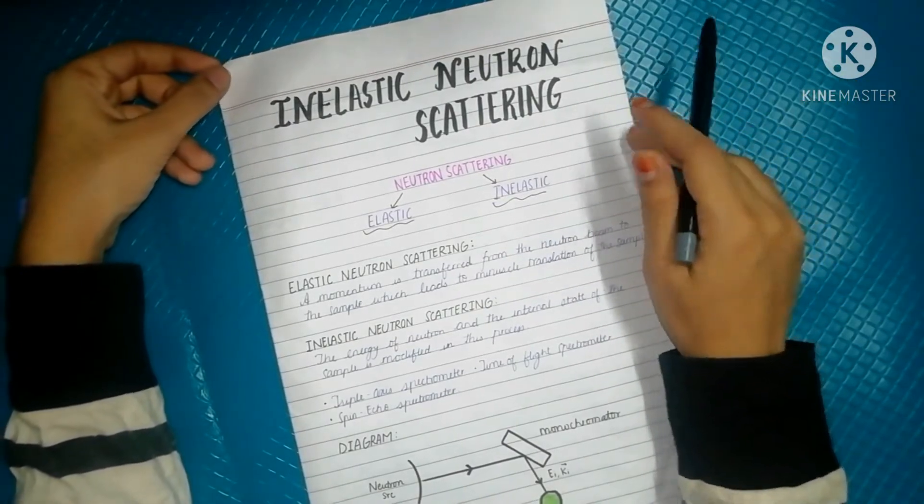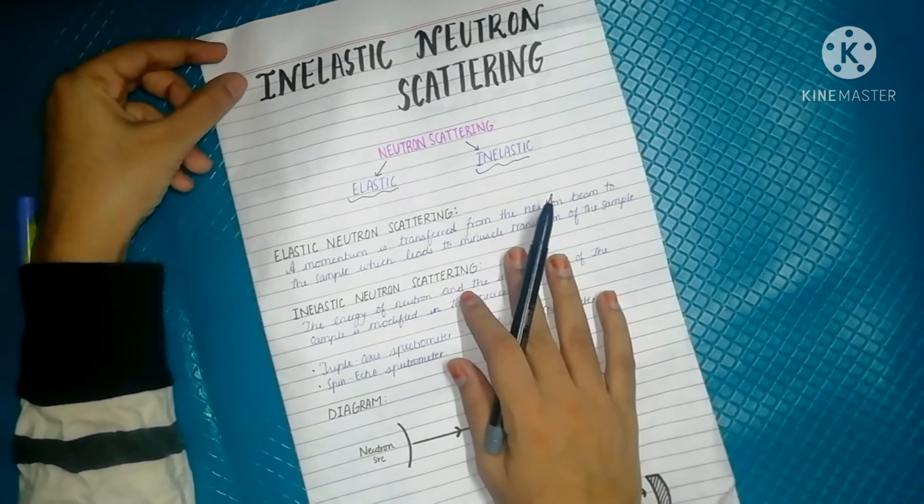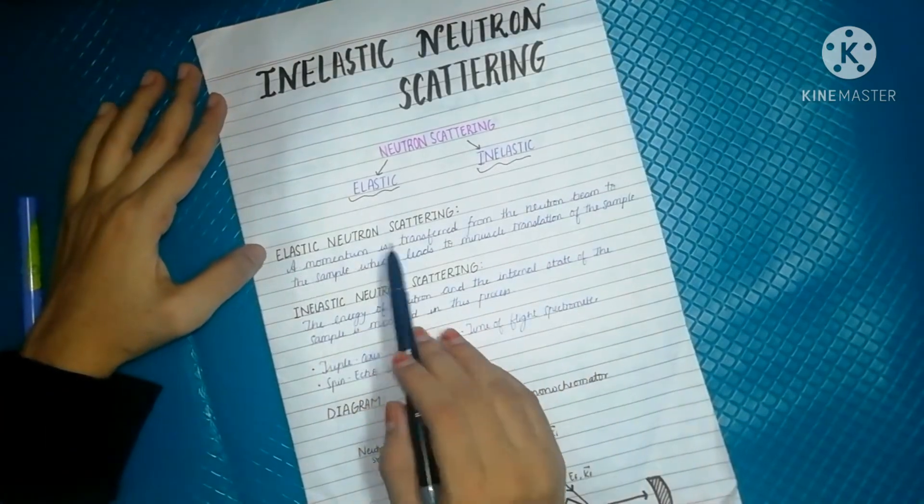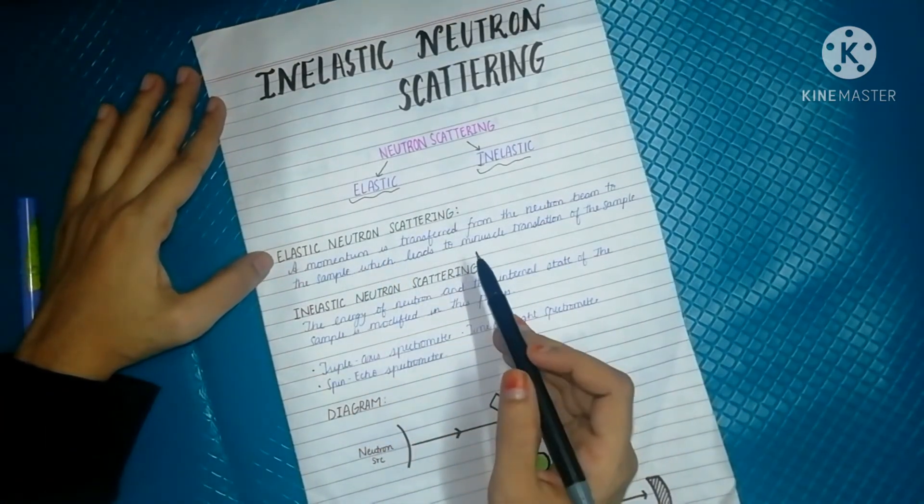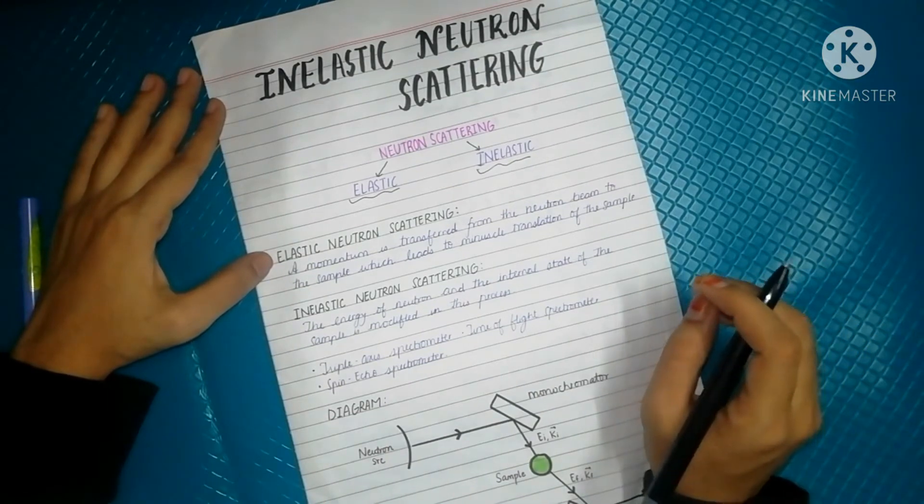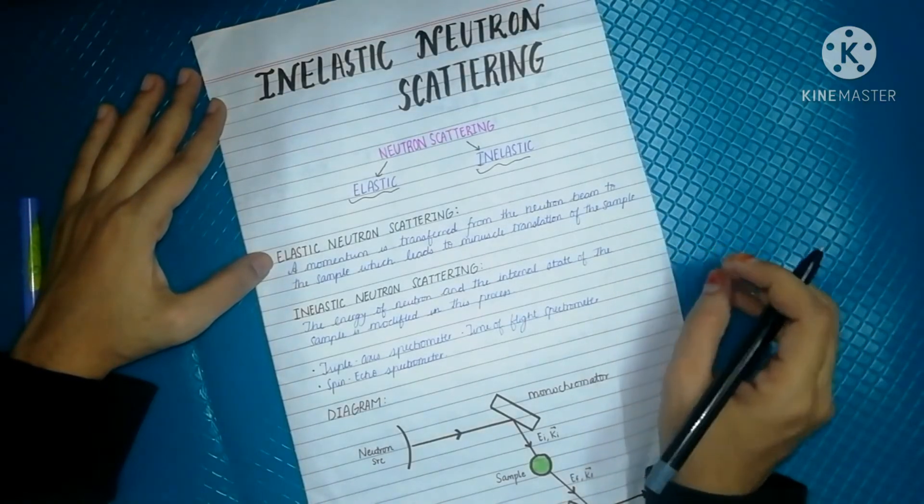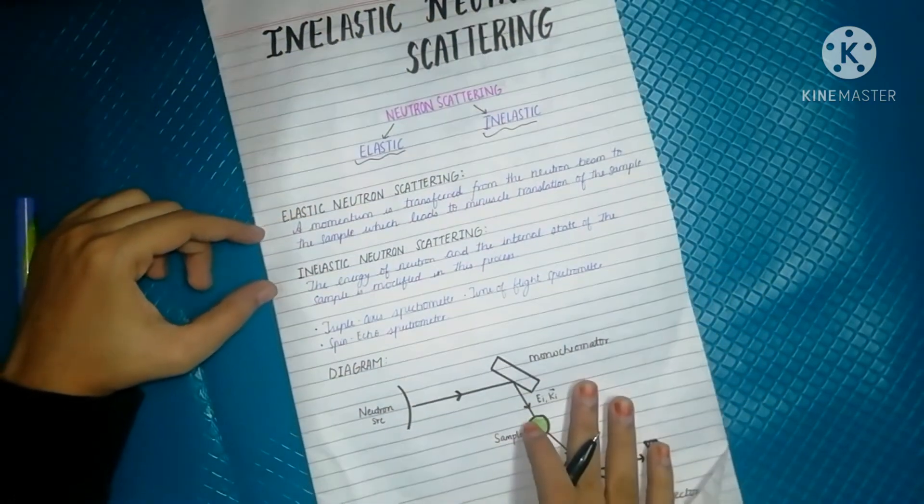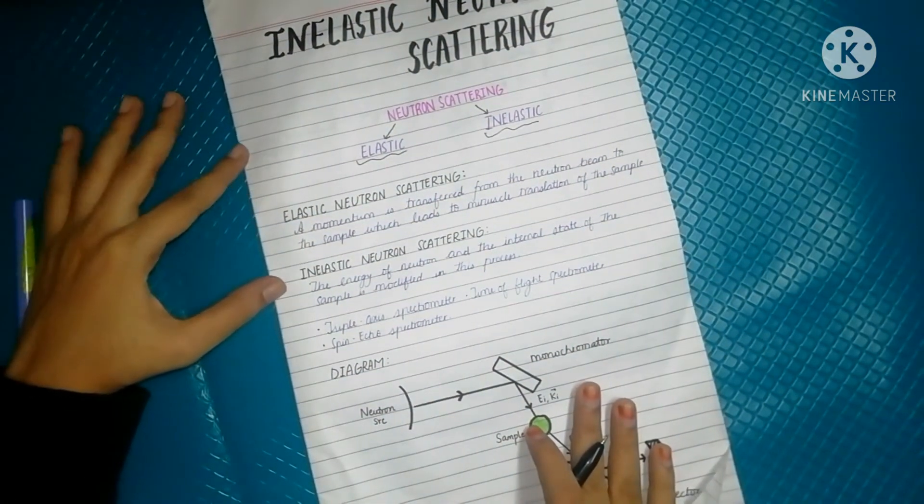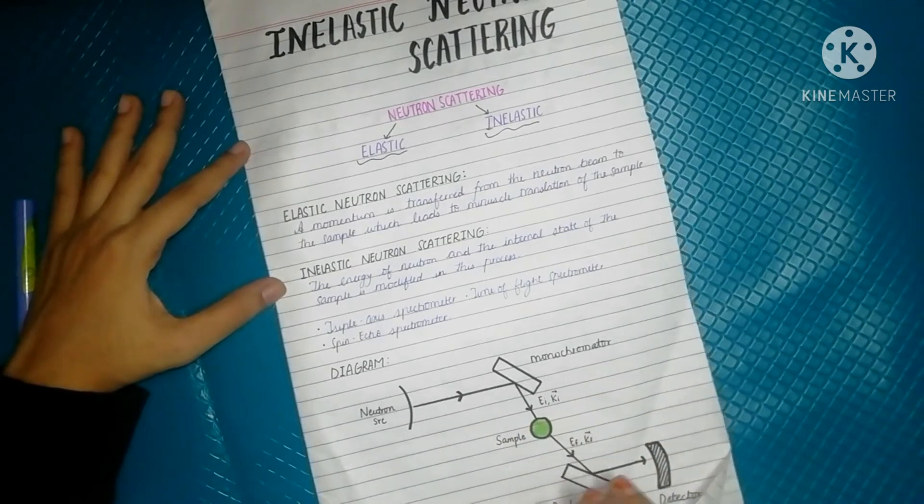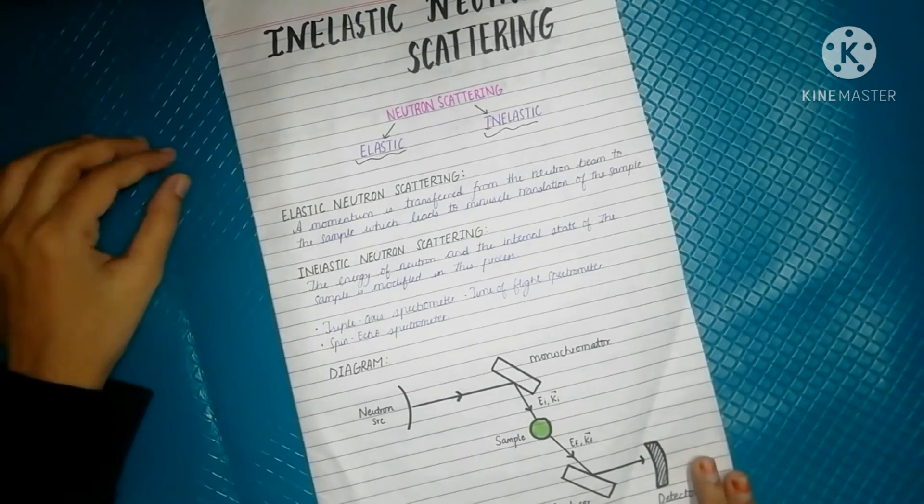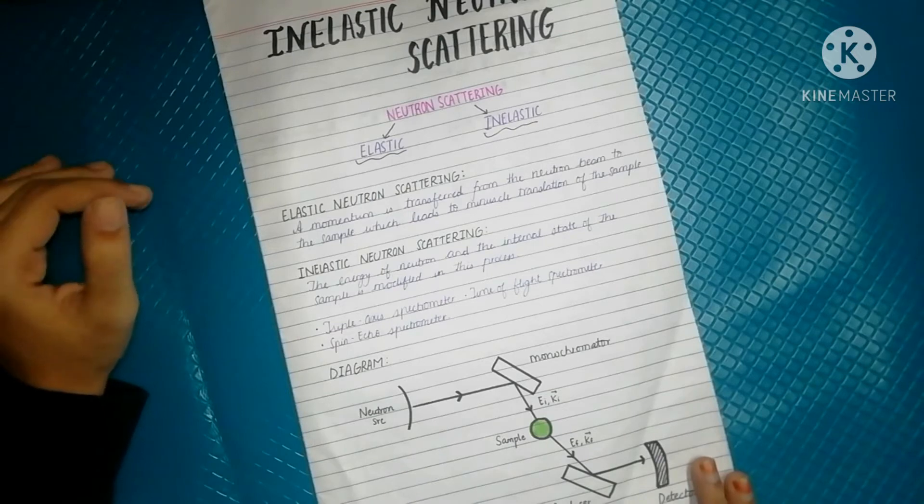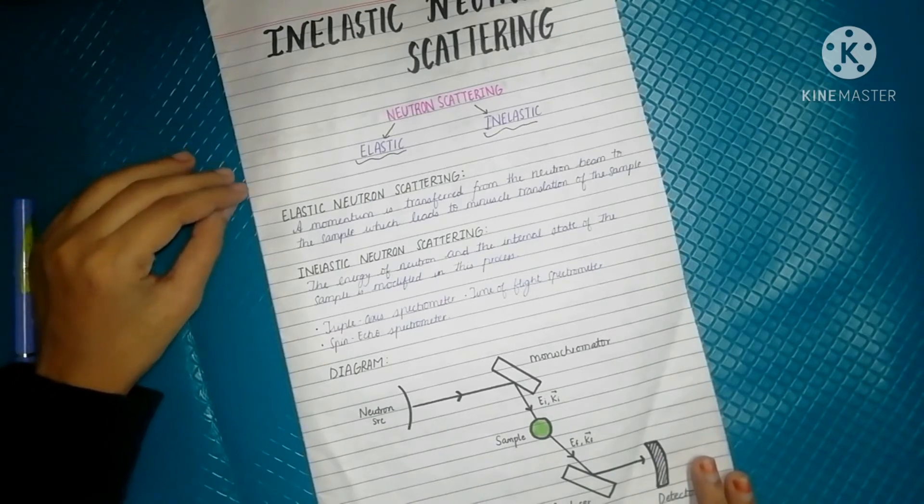In elastic neutron scattering, momentum is transferred from the neutron beam to the sample, but in this process the internal state of the sample remains unchanged. Whereas when we talk about inelastic neutron scattering, here an excitation is seen in the sample after the neutron beam hits it, and that changes the internal state of the sample.